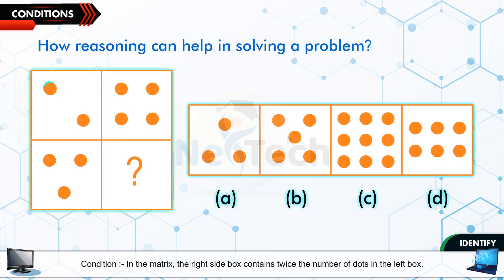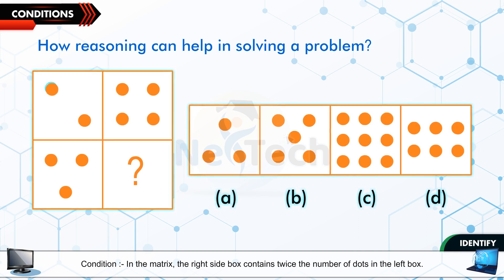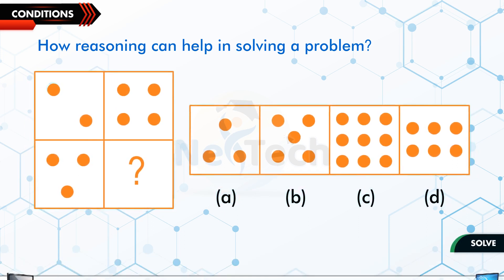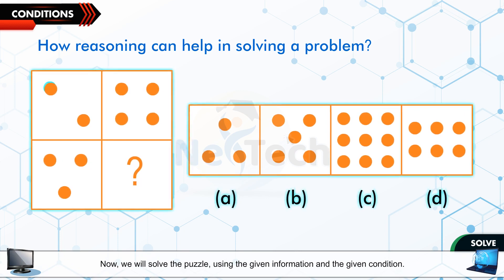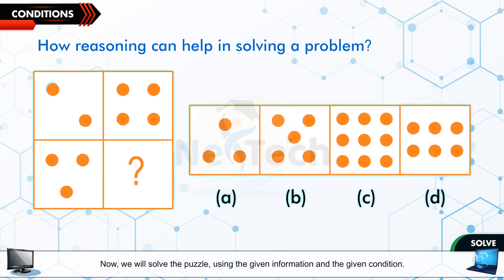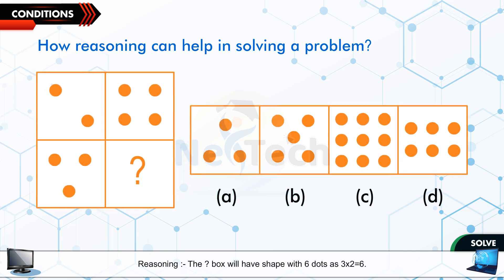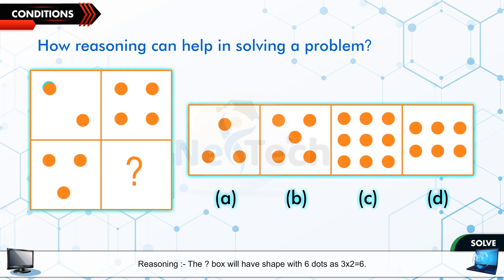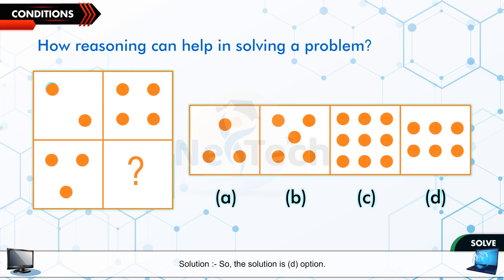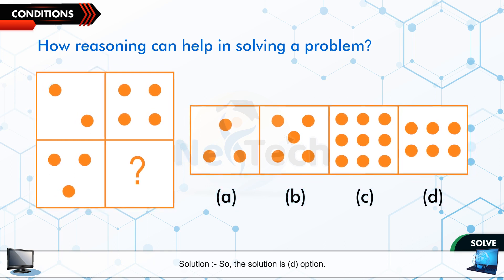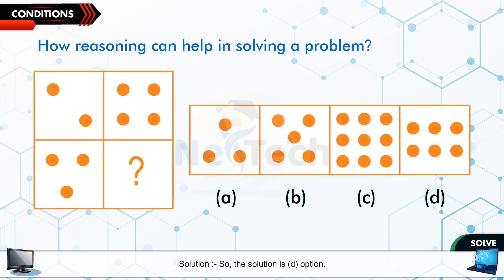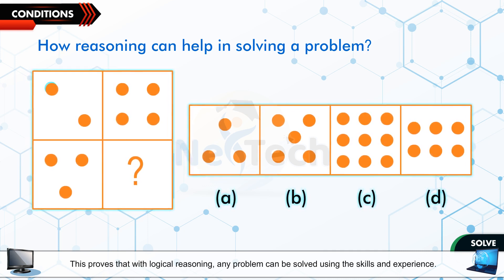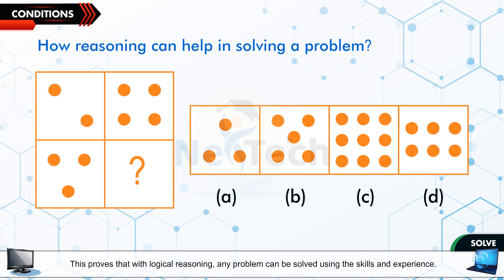Condition: In the matrix, the right side box contains twice the number of dots in the left box. Solve: Now we will solve the puzzle using the given information and the given condition. Reasoning: The question mark box will have shape with six dots as 3×2 equals to 6. Solution: So, the solution is D option. This proves that with logical reasoning, any problem can be solved using the skills and experience.